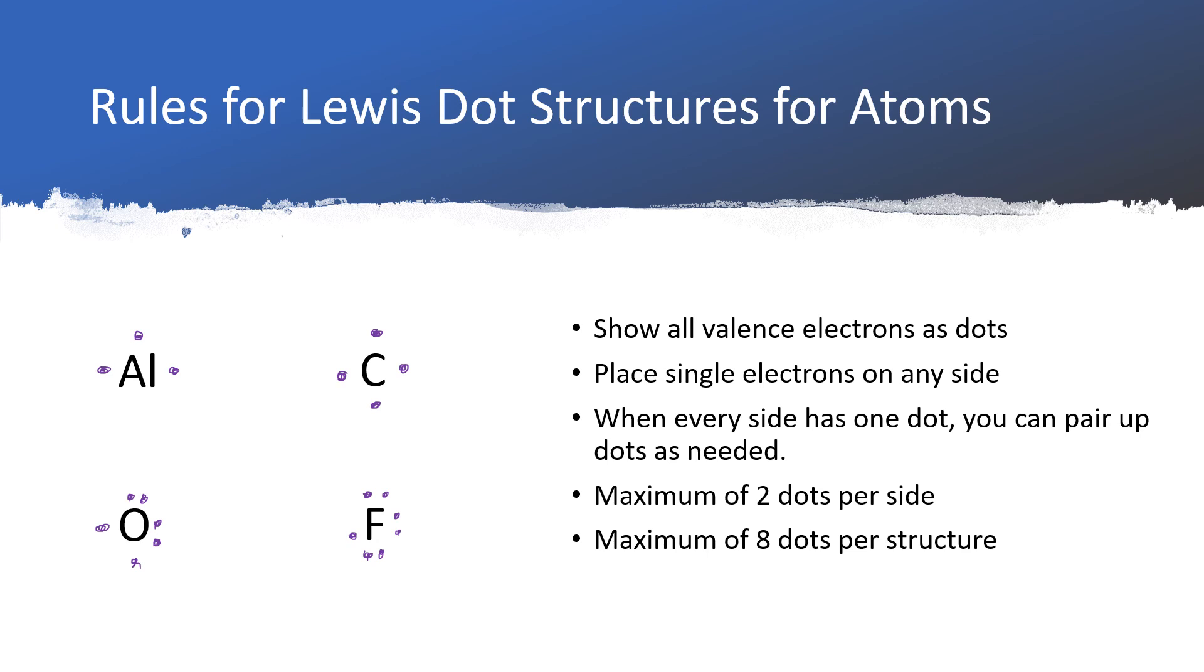The most number, the largest number of valence electrons that we can have is eight, and then we would distribute those as two dots per side.